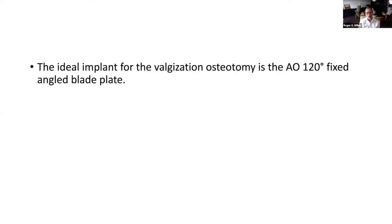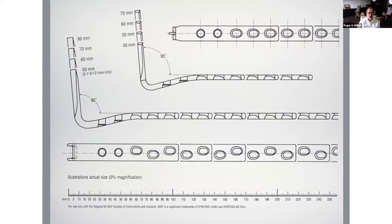The ideal implant for sure is the 120-degree fixed angle blade plate. You can use other devices. I'm going to take you through an exercise right now where we use the 95-degree. It is possible if you have large cavitary defects in the femoral head, you may choose a lower angle plate in order to get the blade into a lower position on the femoral head.